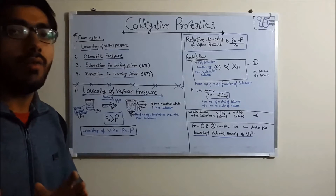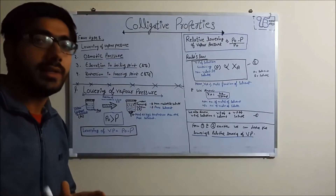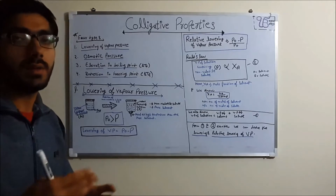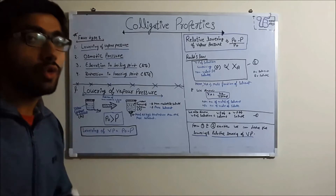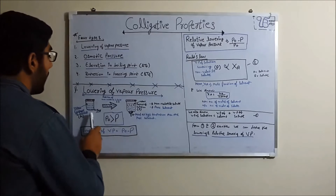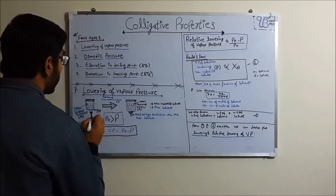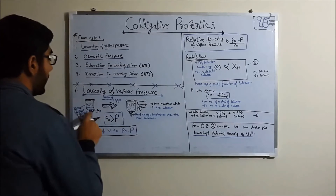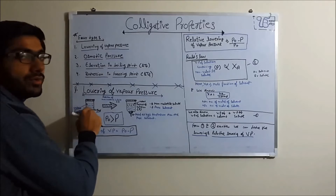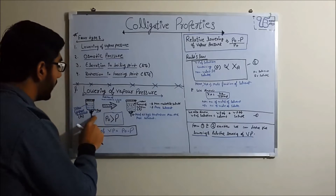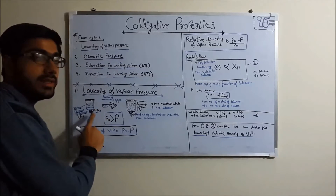Whenever you add a non-volatile solute to the vapor pressure of a pure solvent, the vapor pressure of the pure solvent decreases. Why? Because whenever you heat the pure solvent in the presence of a burner, the vapor pressure increases. So the vapor pressure of the pure solvent is very high.